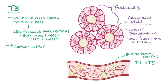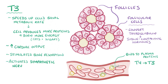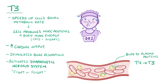T3 also increases cardiac output, stimulates bone resorption, which thins out the bones, and activates the sympathetic nervous system, which is the part of the nervous system responsible for our fight-or-flight response. Thyroid hormone is important, and the occasional increase is like getting a boost to fight off a hungry predator or to stay warm during a snowstorm.